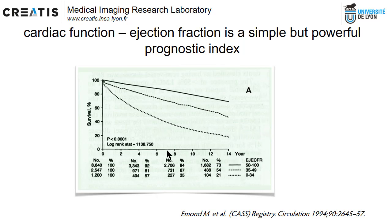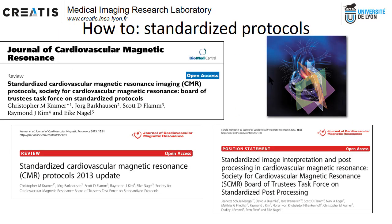I would like to share this data from the past — a 1994 study, the CAS study, that showed that patients with ejection fraction below 35% have four times higher chance to die than patients with ejection fraction over 50%. Even delayed enhancement is not such a powerful index. There are many ways people try to do it, but there is one way that has been put on paper in the recommendation of the SCMR.